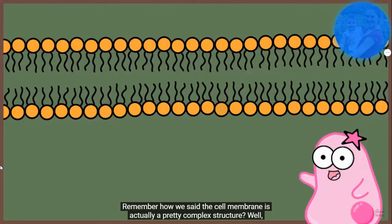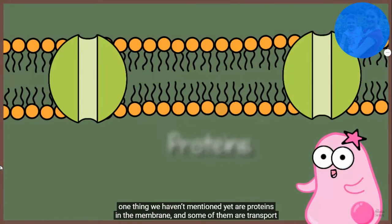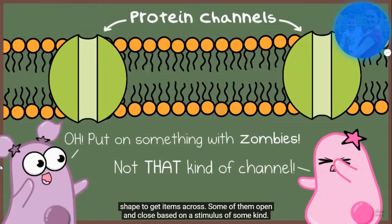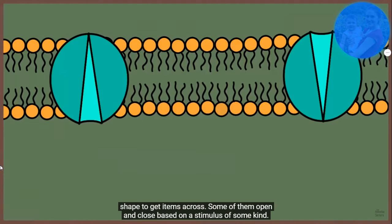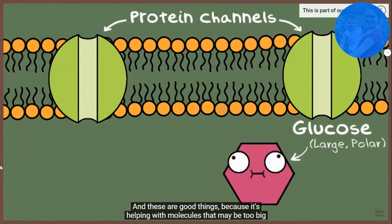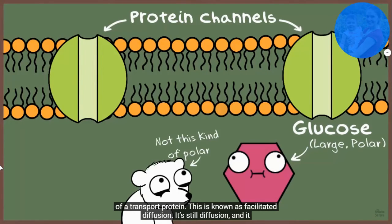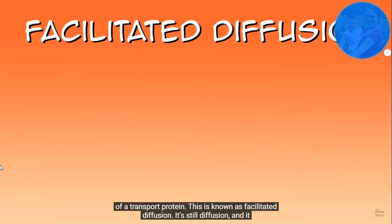Now, remember how we said the cell membrane is actually a pretty complex structure? One thing we haven't mentioned yet are proteins in the membrane, and some of them are transport proteins. Some transport proteins act as channels. Some of these proteins actually change their shape to get things across. Some of them open and closed based on some kind of stimulus. All of these are good things because it's helping with molecules that may be too big to cross the membrane on their own, or molecules that are polar and therefore need the help of a transport protein.